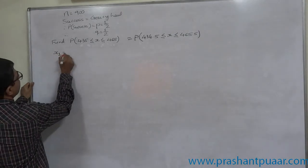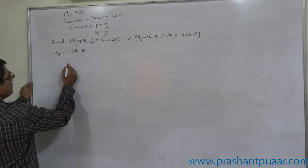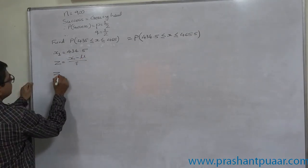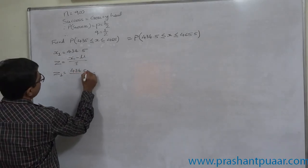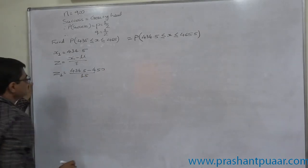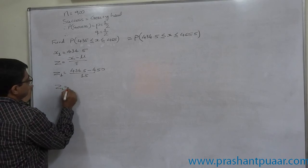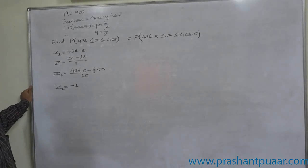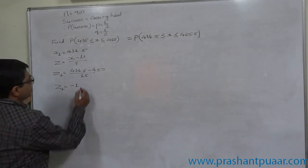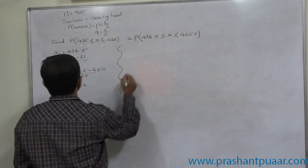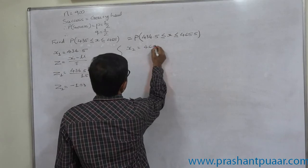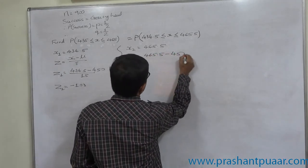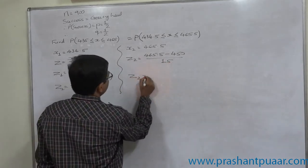Now solving the original problem: after applying the continuity correction factor, let x1 = 434.5. Then z1 = (434.5 − 450) / 15 = −1.03. And x2 = 465.5, so z2 = (465.5 − 450) / 15 = +1.03.